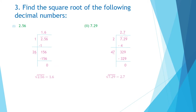Question number 3: find the square root of the following decimal numbers. Question number 1 is 2.56. First, we have to group the numbers and put the bars. The integer part has only one digit, so it forms one group. In the decimal part, we have only two digits — 5 and 6 — which form another group with the second bar above them.